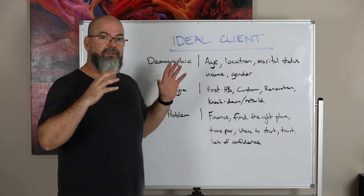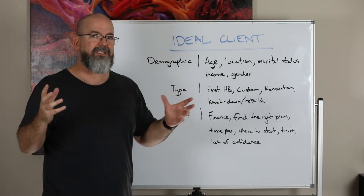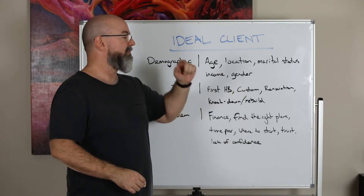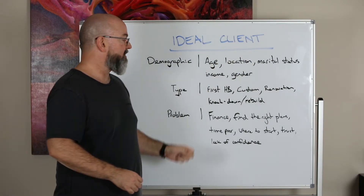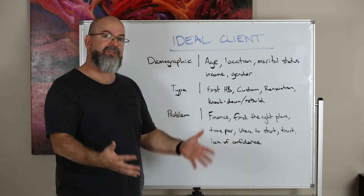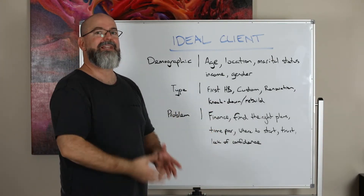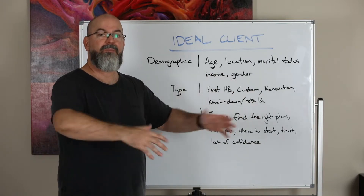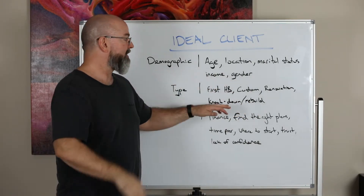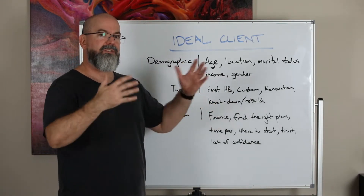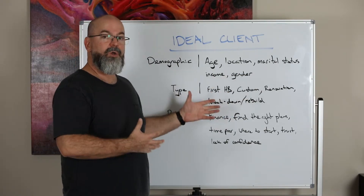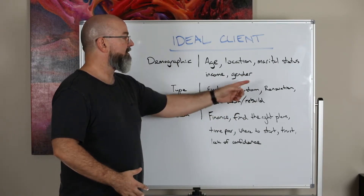The next thing we look at is the type. Are we going after first home buyers? Are we custom home builders? Are we just doing renovations? Are we looking at knockdowns and rebuilds in established suburbs? Or even development — where there's been new changes to the R codes, where people will start to build more and knock down and put in triplexes or duplexes? Think about the type of client and how you're going to speak to them.